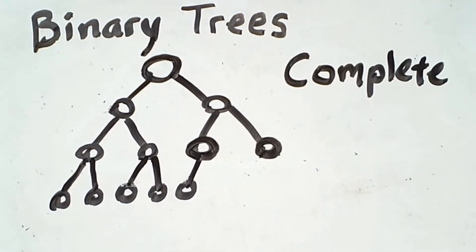A complete tree differs from a full tree in that the very last level may not be completely filled. However, of those leaf nodes that are present, that level must be filled out from left to right.